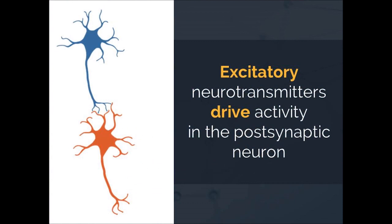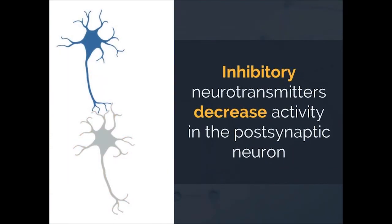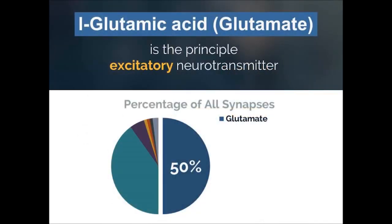An excitatory neurotransmitter drives activity in the postsynaptic neuron — we can think of this as go, or yes. An inhibitory neurotransmitter decreases activity in the postsynaptic neuron — we can think of this as stop, or no. L-glutamic acid, better known as glutamate, is the principal excitatory neurotransmitter in the brain. Glutamate is used to communicate at approximately 50% of the synapses in our brain, meaning that half of our synapses are go-synapses.